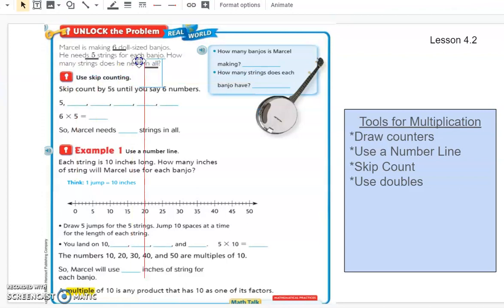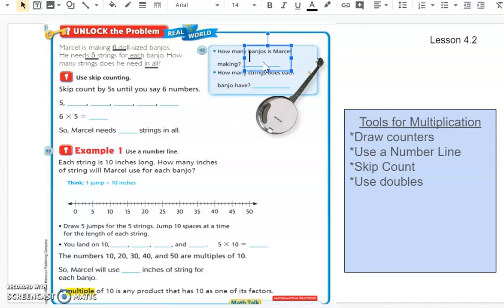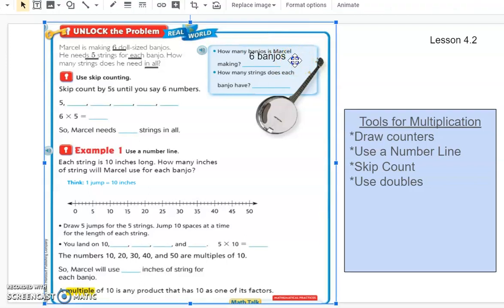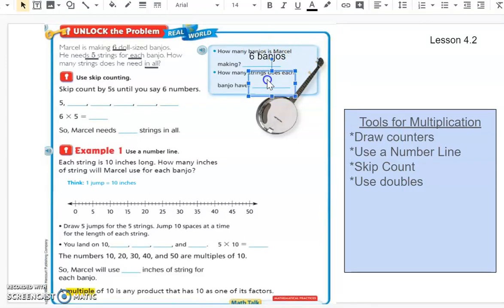So now we're going on to some strategies that we can use to solve these problems. So first I want to think about how many banjos is he making in all? And we know that he's going to be making 6 banjos. So we'll type that in there. And we know that he needs 5 strings. So now that we have that all figured out, we're ready to go on to some problem solving.